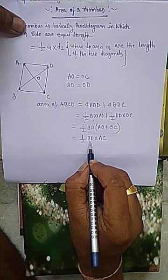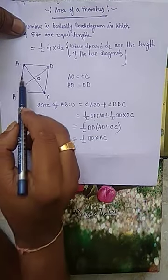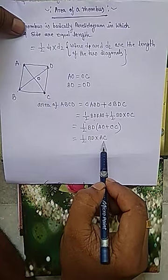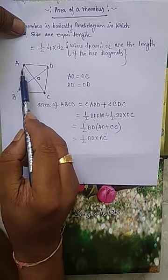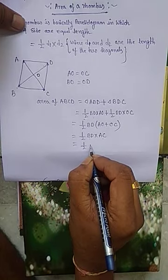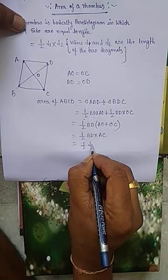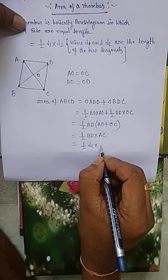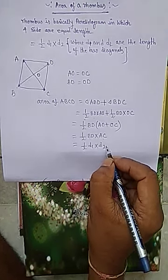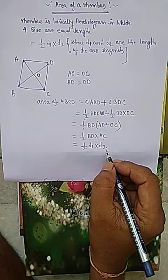Now, BD is equal to length of the first diagonal, and AC is equal to length of the second diagonal. So, we write, half length of the first diagonal D1 into length of the second diagonal D2.